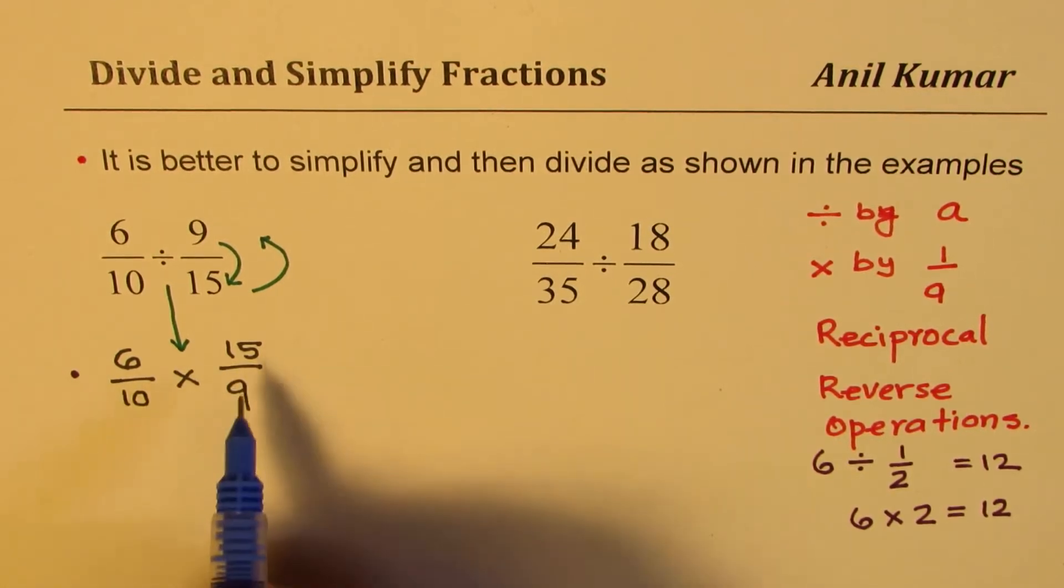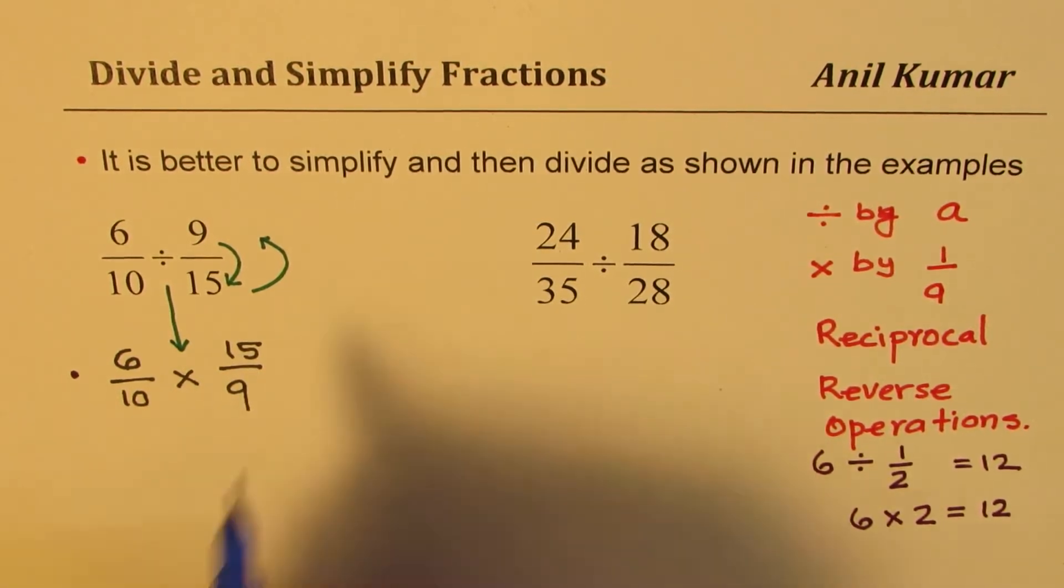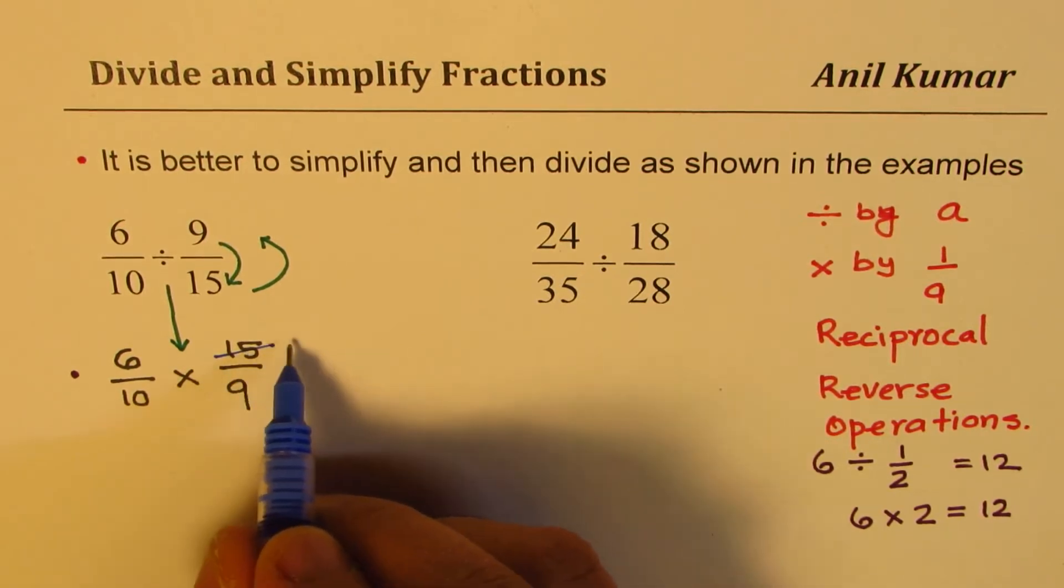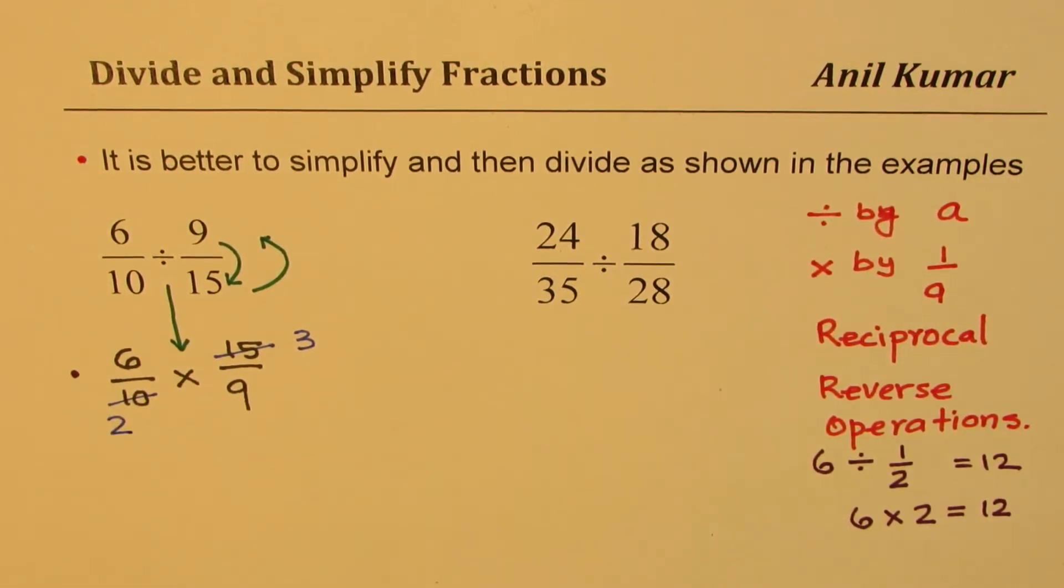Now even to multiply, I will suggest first you simplify, that is to see, check for the common terms. I can divide 15 and 10 both by 5. So divide this by 5: 5 times 3 is 15 and 5 times 2 is 10. Perfect.